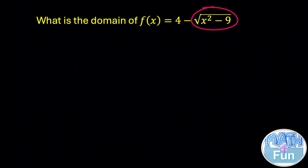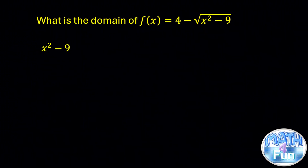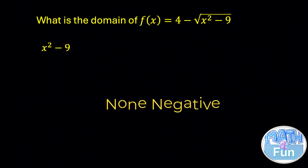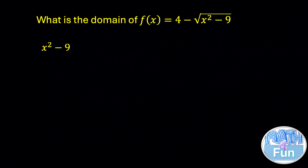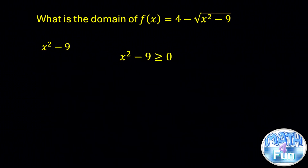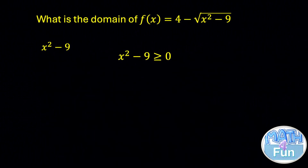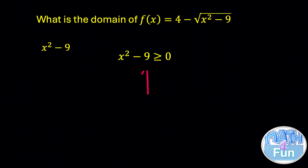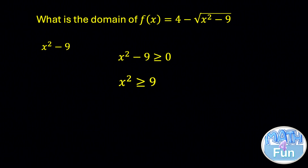The expression inside the square root, x squared minus 9, must be non-negative because the square root of a negative number is not real. Therefore, we need to ensure that x squared minus 9 is greater than or equal to 0. To solve this inequality, we take minus 9 to the other side, so it becomes x squared greater than or equal to 9.